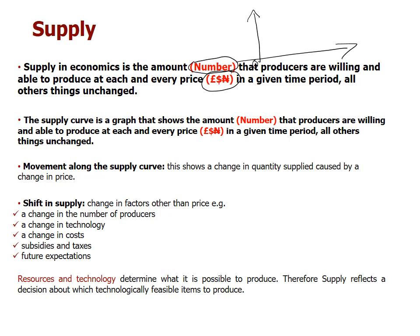The supply curve is a graph that shows this relationship. We usually have price on the vertical axis and quantity on the horizontal axis. If we put one pound, two pounds, three pounds on the price axis, and one pen, two, three on the quantity axis, the supply relationship is usually a positive one — when prices increase, the amount supplied to the market increases.